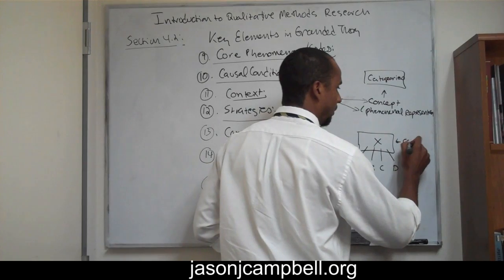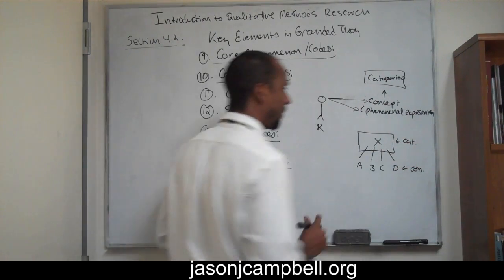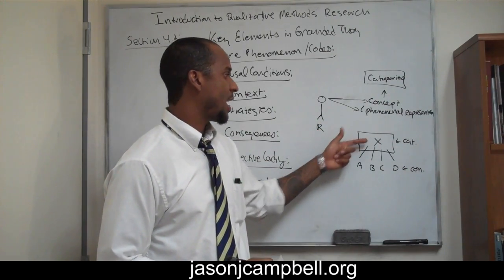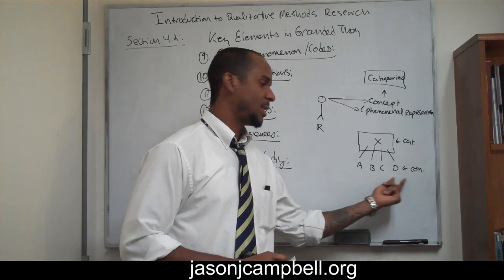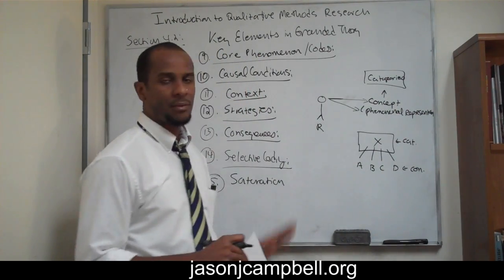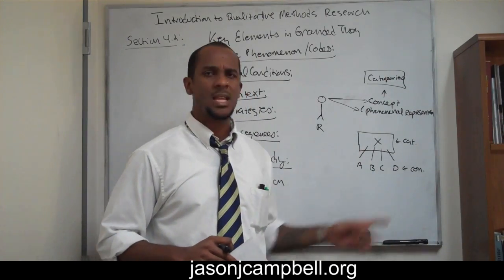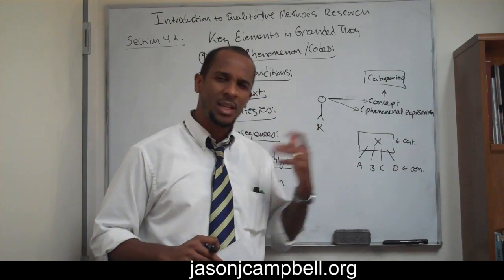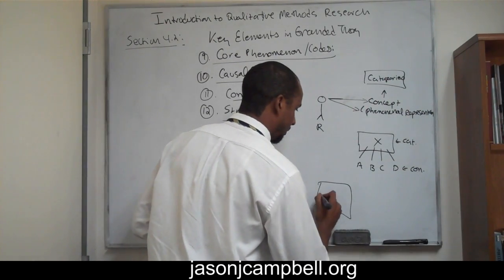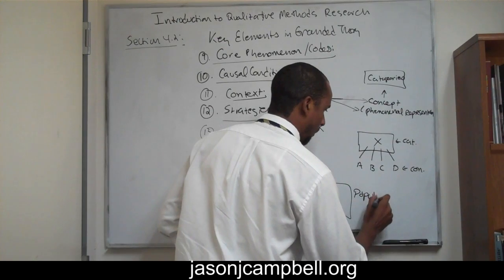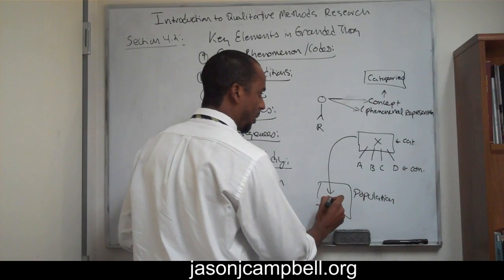So this is my category and these are my concepts. Category X is a composition of concepts A, B, C, D. For whatever reason I feel like I'm missing something — there might be an E in this category. So what I do is go into the population and interview participants.